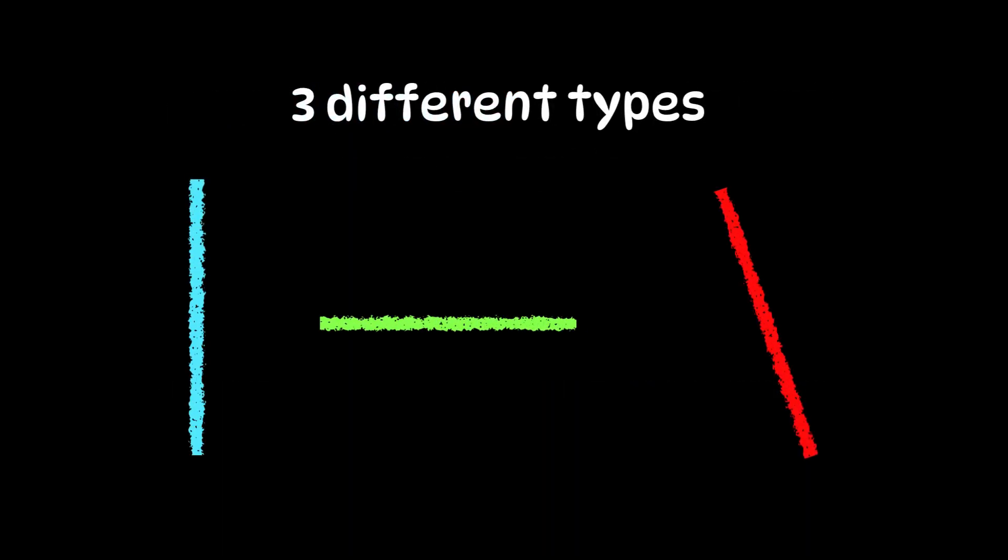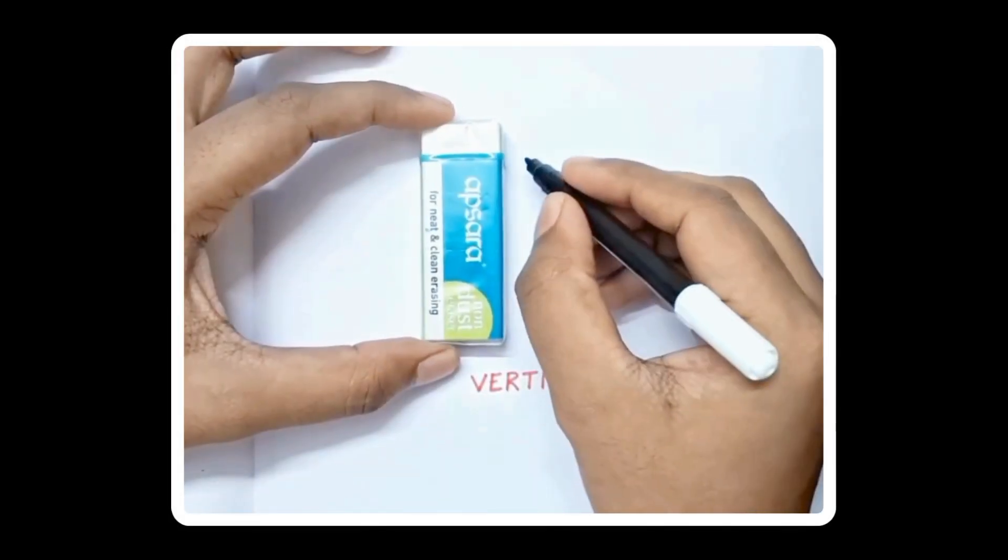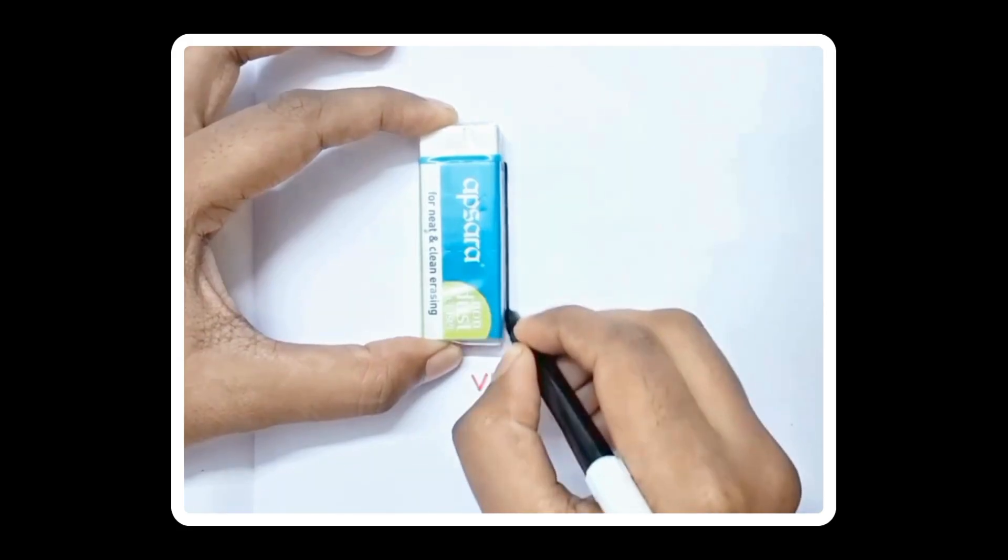A straight line can be of three different types. Vertical lines that go up and down like this, we also call them standing lines.